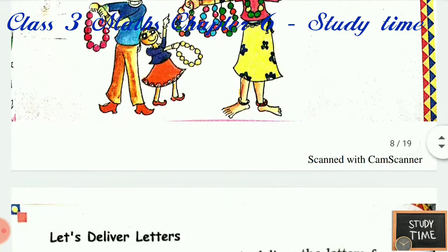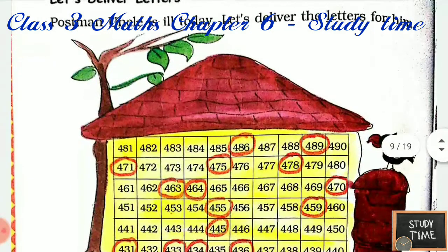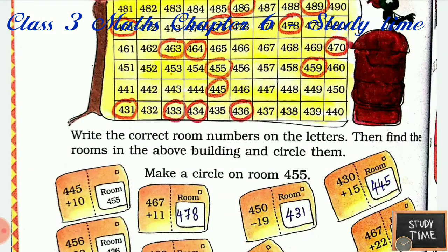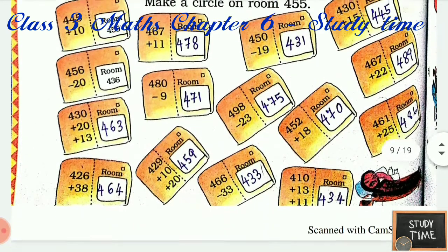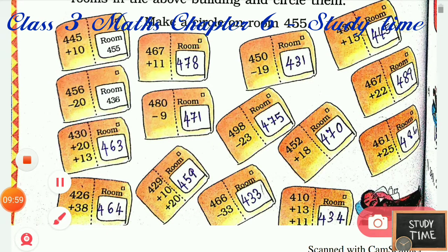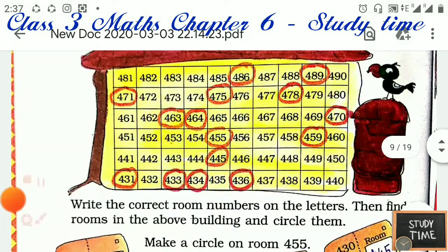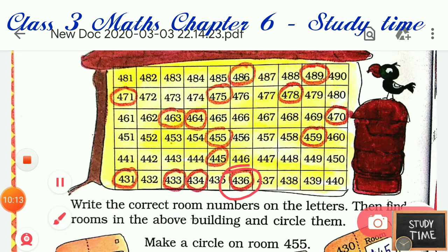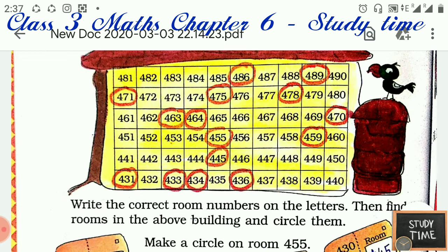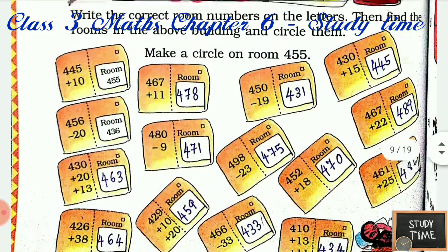Let's deliver letters! Postman uncle is ill today, so let's deliver the letters for him. Write the correct room numbers on the letters, then find the rooms in the building and circle them. They have given clues to find the rooms. For example, 456 minus 20, the answer is 436. You go to room 436 and circle it.